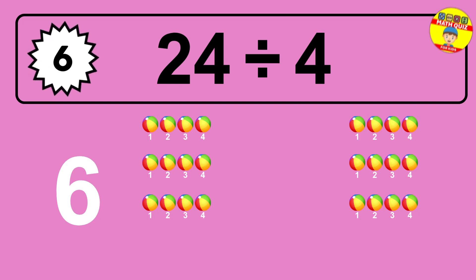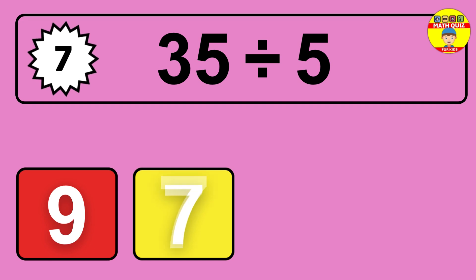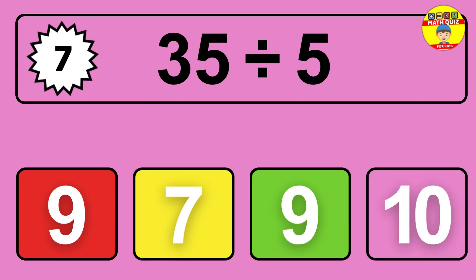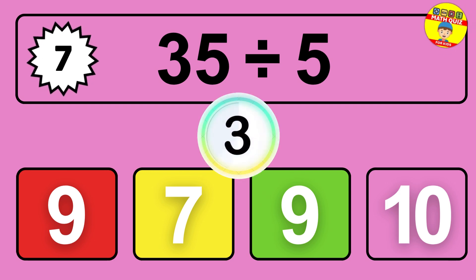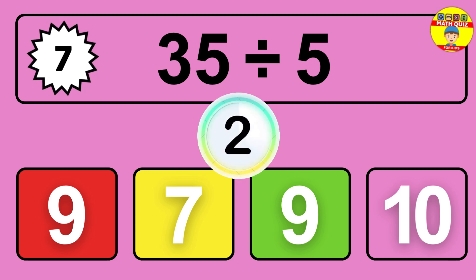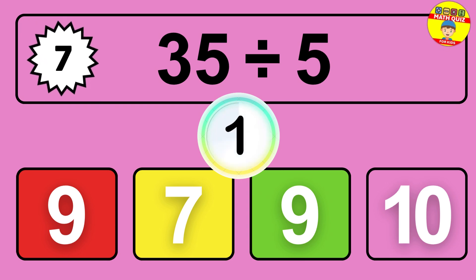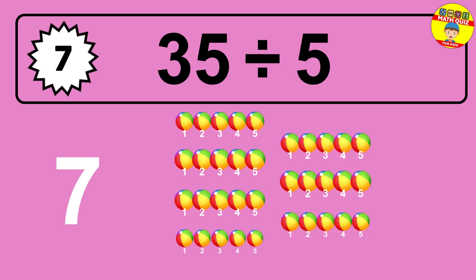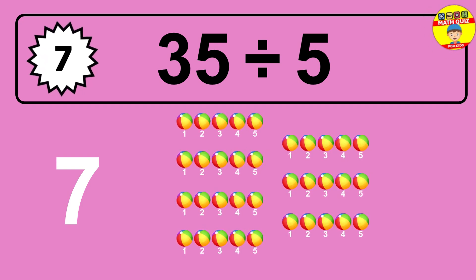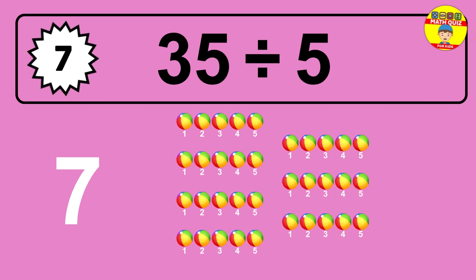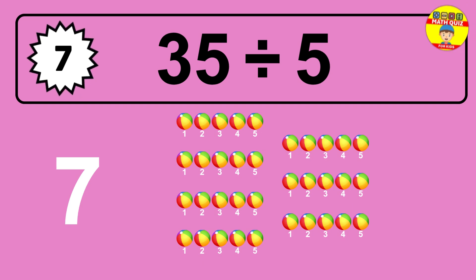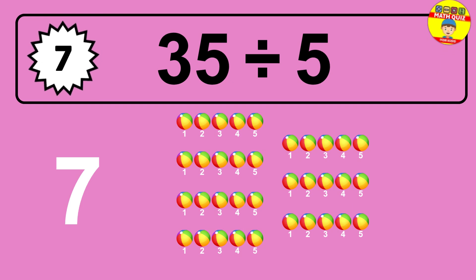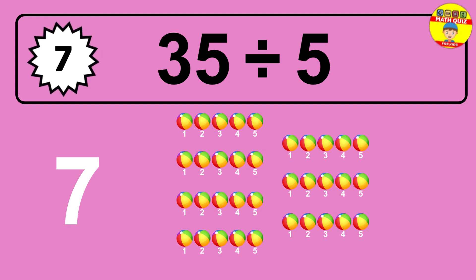35 divided by 5 is time to think. Let's go to the solution. Divide the number 35 by 5. Each group contains 5 units, so dividing 35 by 5 results in 7 equal groups. Thus the result is 35 divided by 5 equals 7.